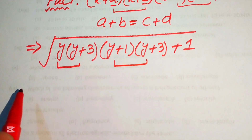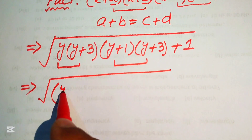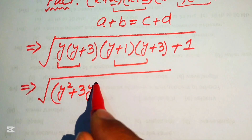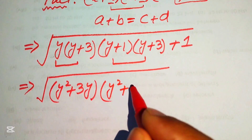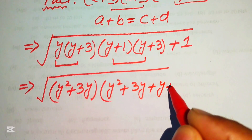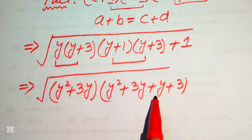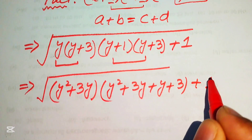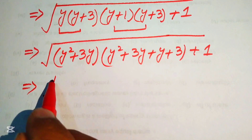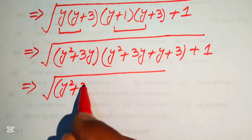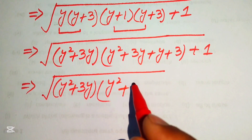Next we multiply each pair. Multiplying y(y+3) gives y squared plus 3y. Multiplying (y+1)(y+2) gives y squared plus 3y plus 2. So our expression becomes (y² + 3y) times (y² + 3y + 2), plus 1.